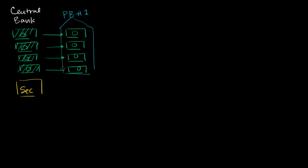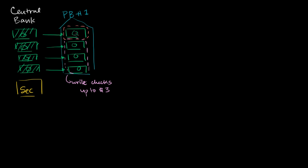When they deposited in private bank number one, they said they need three of these dollars on demand and want to write checks against them. So they put $3 into a checking account, with the ability to write checks up to $3. To get a little more interest, and because the bank doesn't have to keep reserves against it, they put $1 into a savings account — and they cannot write checks against that savings account.